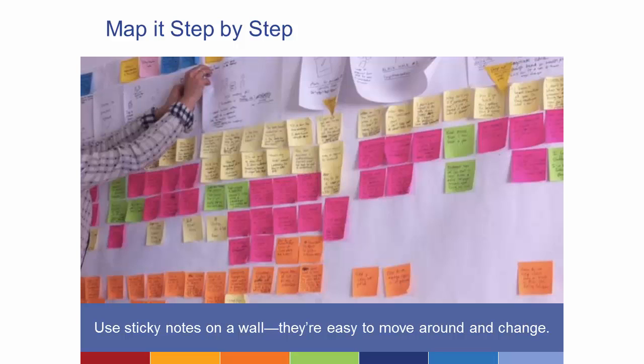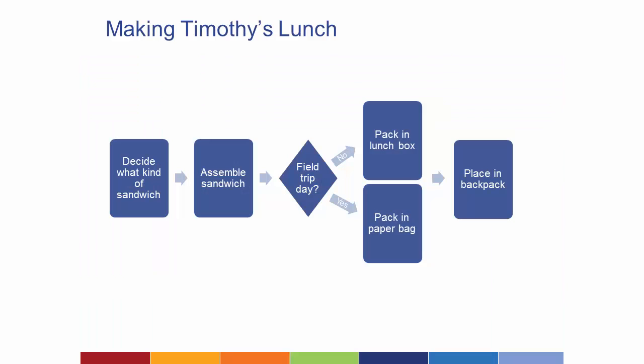Let me help you understand how this might work using an example that hopefully many of us can relate to. This is about making my son Timothy's lunch — he's seven years old and goes to a summer program. There are basically four steps: deciding what kind of sandwich he's going to make, assembling a sandwich, then a decision point — is it a field trip day? If so, pack it in the paper bag; if not, pack it in the lunch box. Then place the lunch in the backpack.